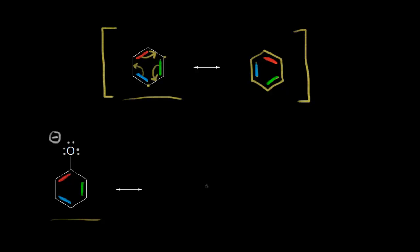I could start with the other resonance structure just like we did for benzene, but I'll save that for the end. One of our patterns is a lone pair next to a pi bond, and that's what we have here. A lone pair of electrons on this oxygen — I'll make it magenta — is next to the pi bond in red. So we take the electrons in magenta and move them into here, which would mean too many bonds to this carbon, so we take the electrons in red and push them off onto this carbon.